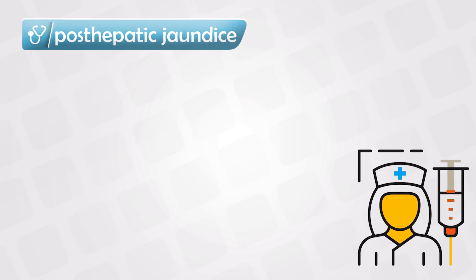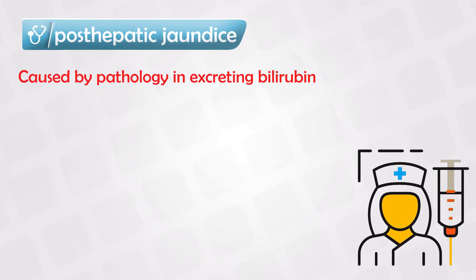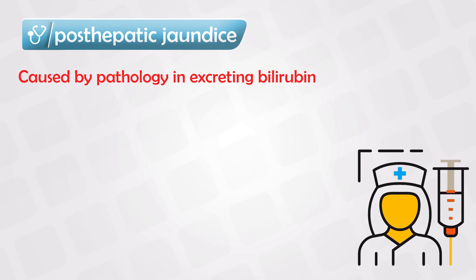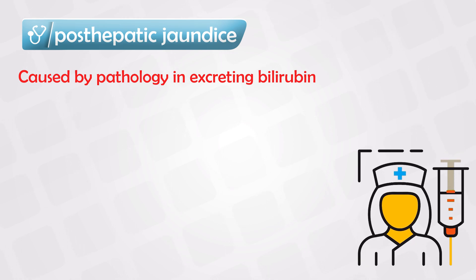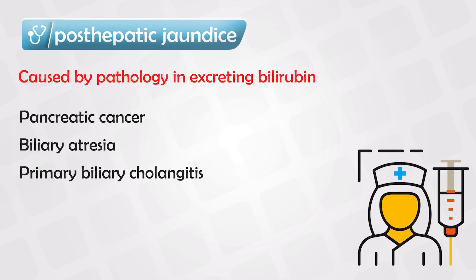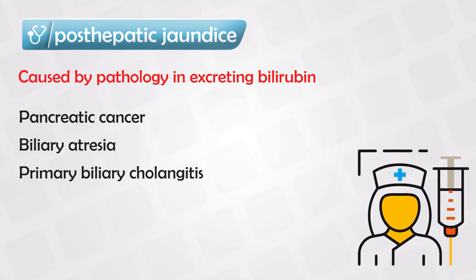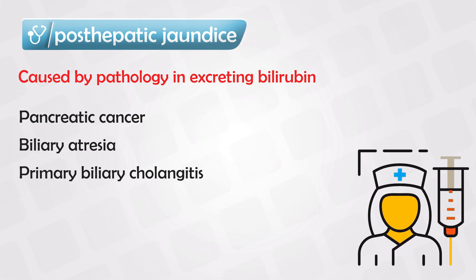The third category is post-hepatic causes, which is jaundice occurring after the liver. There is no pathology in the liver or the blood, and the liver can produce bilirubin with no problems. But the problem occurs after the liver produces bilirubin — the most common example being obstruction in the biliary tree, pancreatic cancers, biliary atresia, or primary biliary cirrhosis.